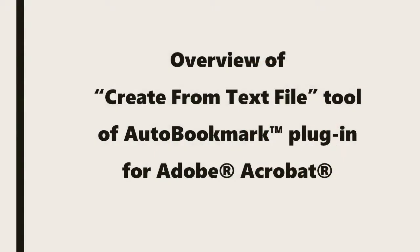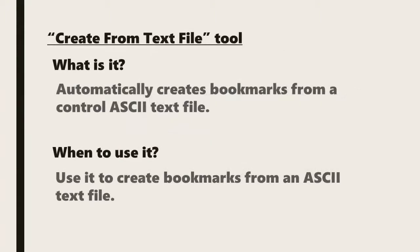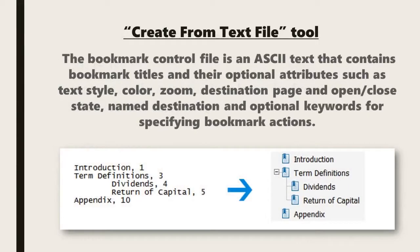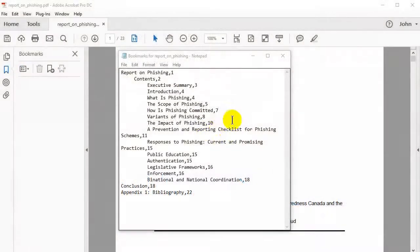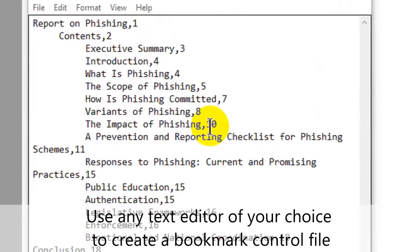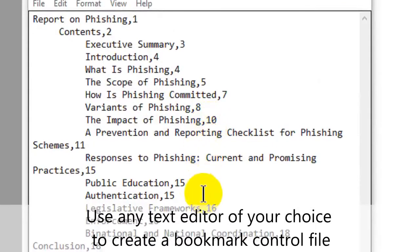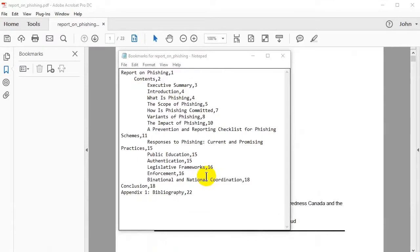Next we'll look at the Create from Text File tool for the Auto Bookmark plugin. This tool automatically creates bookmarks from a control ASCII text file. The bookmark control file is an ASCII text that contains bookmark titles and their optional attributes such as text style, colour, zoom, destination page, open/closed state, name destination, and optional keywords for specifying bookmark actions. Begin by using a text editor of your choice to create a bookmark control file.